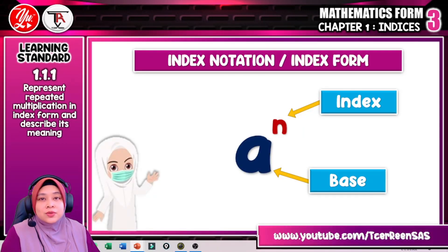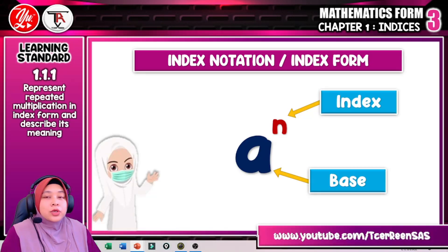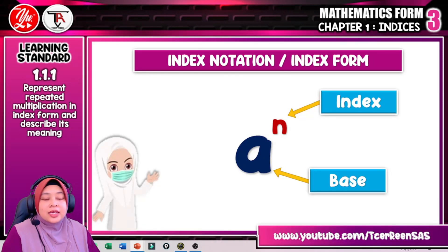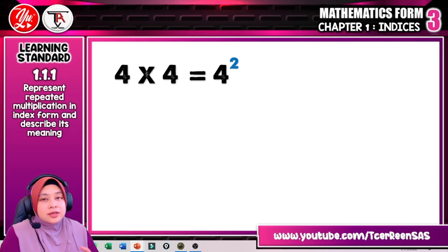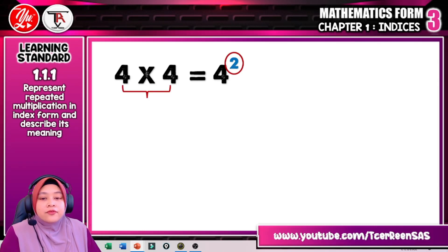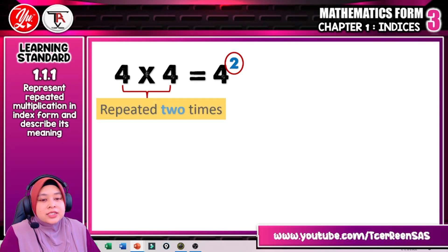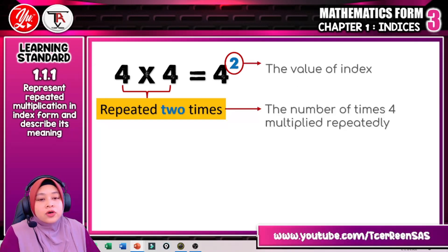We usually use A for the base and N for the index. A to the power of N, we call it as index notation or index form. To make it clear, index notation consists of base and index. 4 times 4 is equal to 4 to the power of 2. What is the relationship between these two expressions? 4 to the power of 2 and 4 times 4 are related — 4 times 4 means 4 is multiplied 2 times repeatedly. And 4 to the power of 2 is the index.